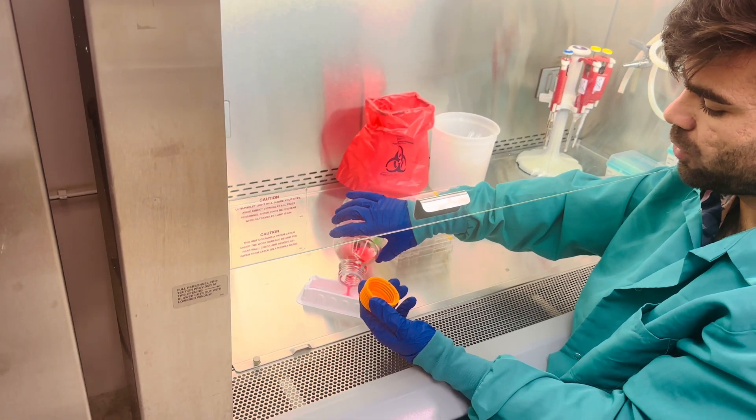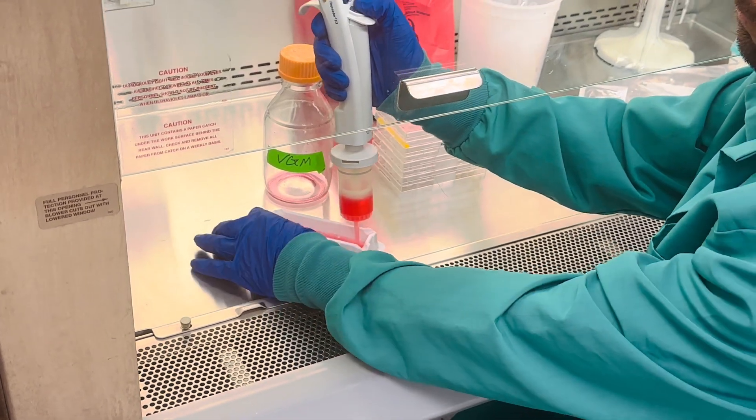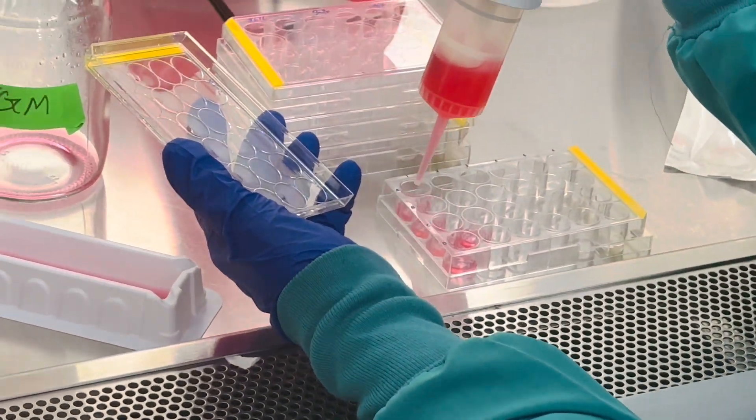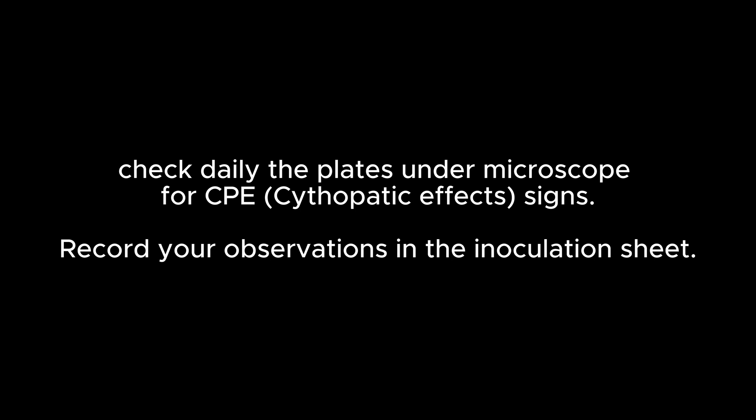Now it is time for the VGM overlay. Add 0.5 milliliters of the VGM overlay to each well. That was all from me in this video. In the next video I will talk about the second phase — the hemagglutination assay for both CPE-positive and CPE-negative samples. I hope you found this video helpful.